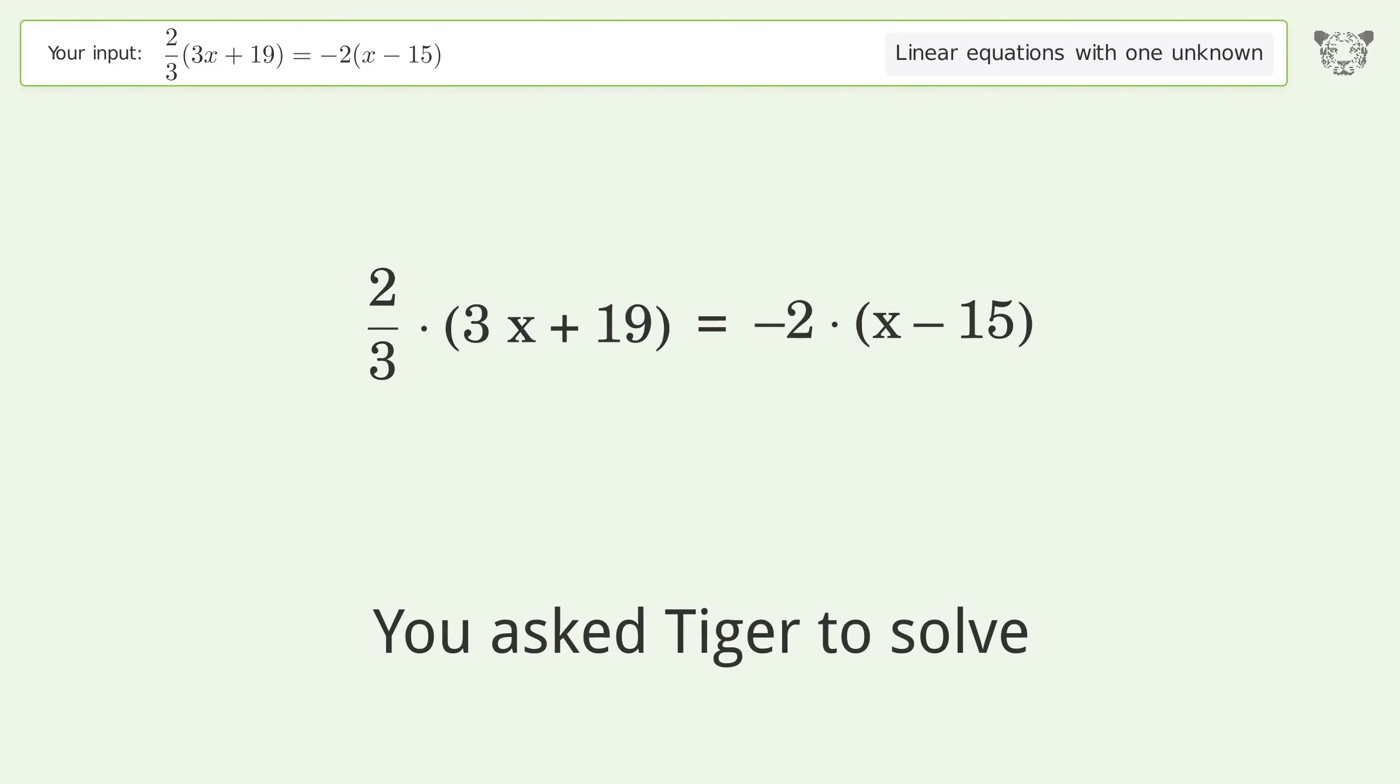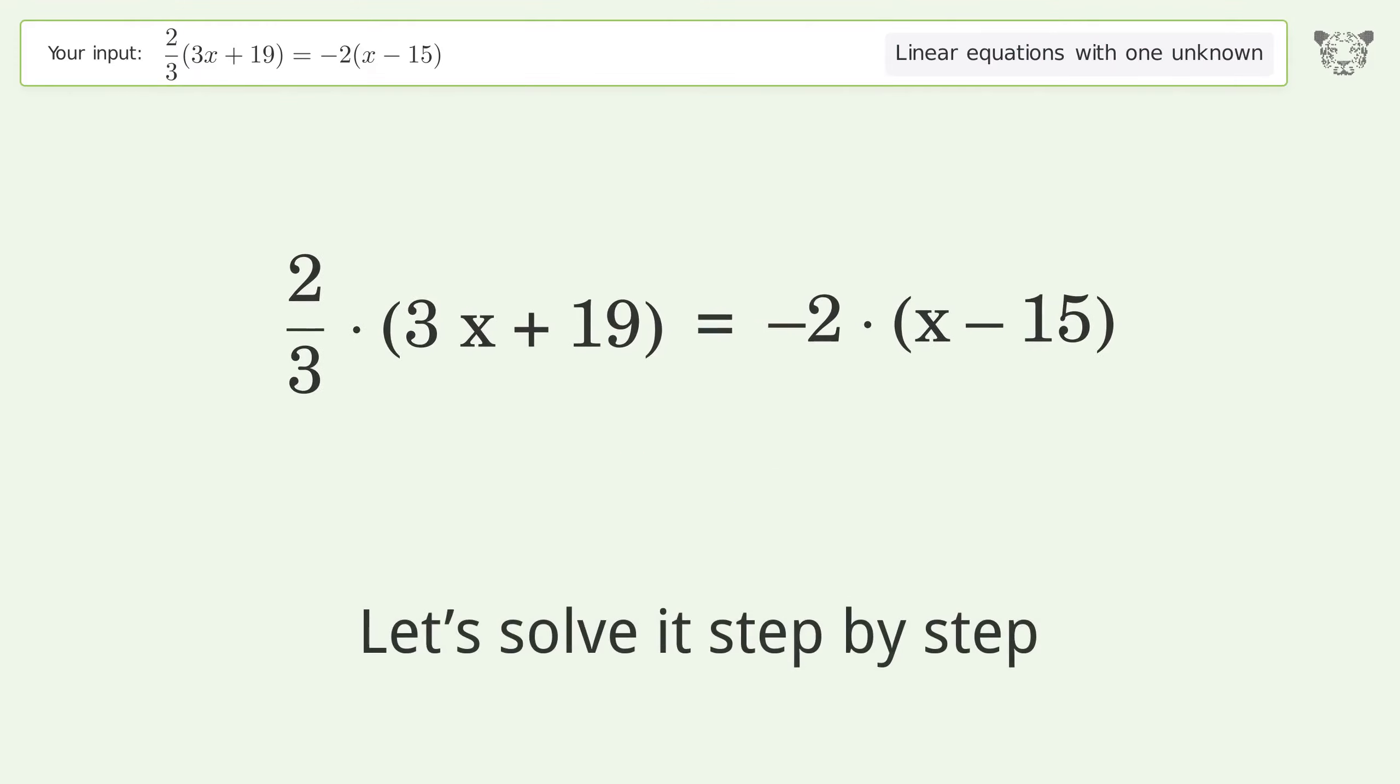You asked Tiger to solve this. This deals with linear equations with one unknown. The final result is x equals 13 over 3. Let's solve it step by step. Simplify the expression, multiply the fractions.